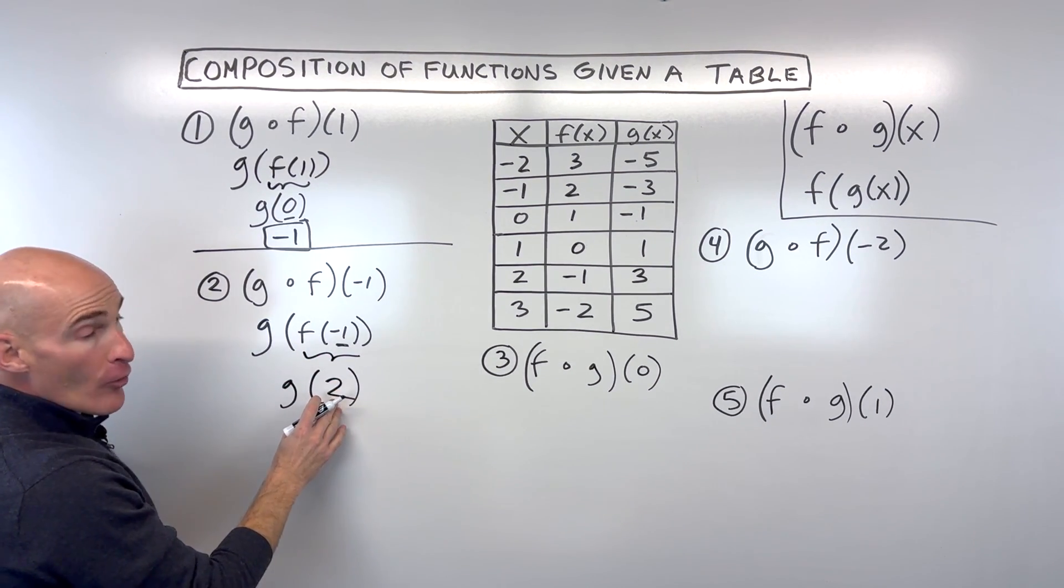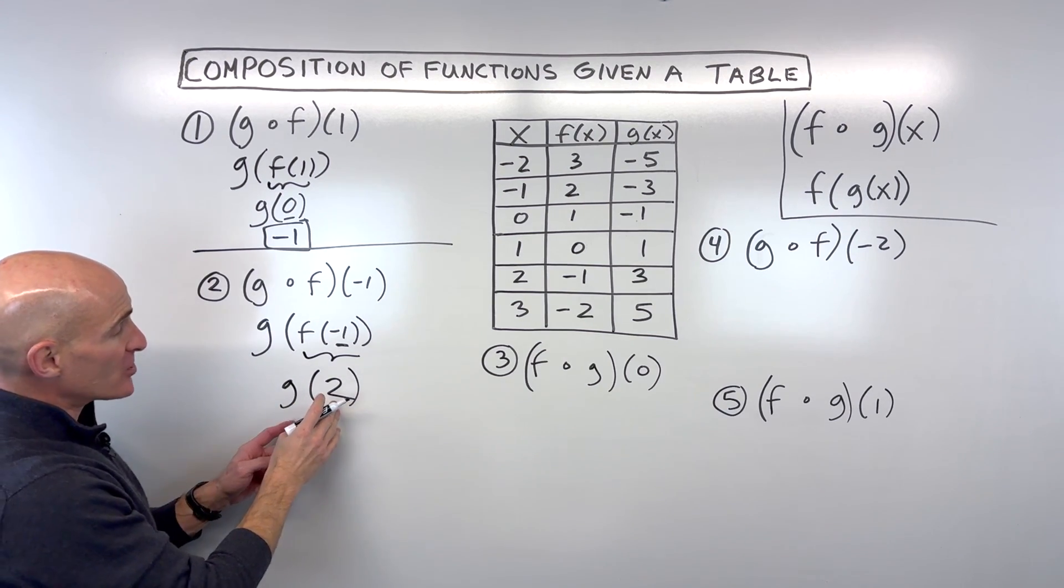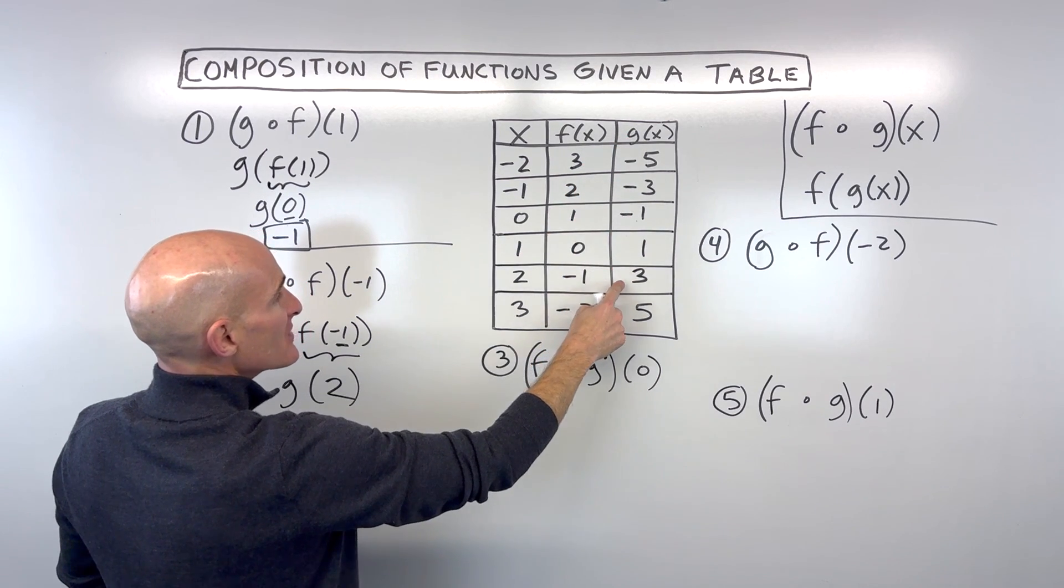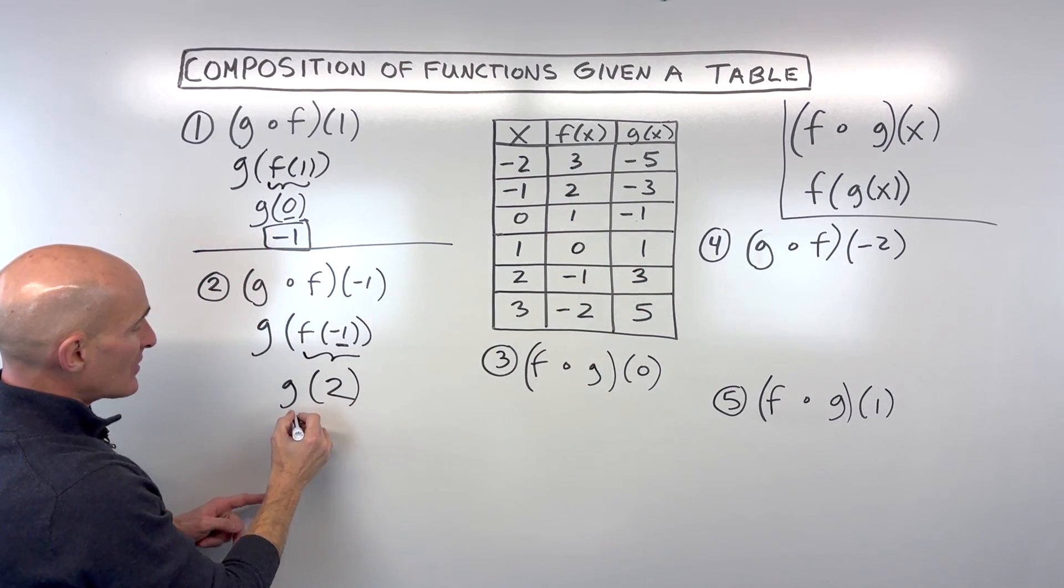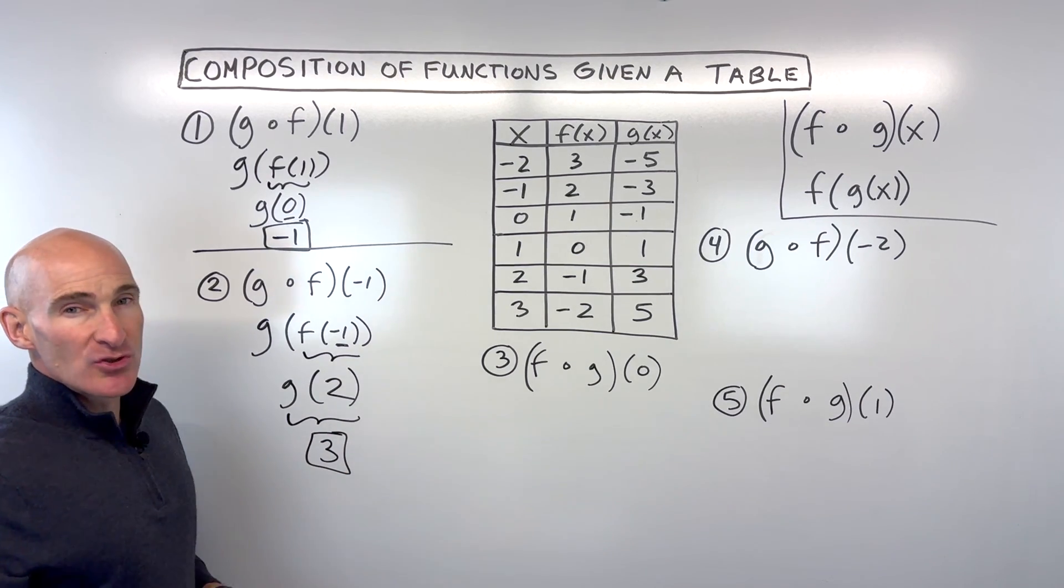Now you can see that output becomes the input in our next function, our g function. So we go to x equals two, and our g function output is three. That means this whole thing here is equal to three. So it's kind of like two steps.